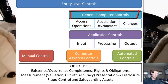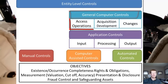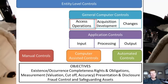The key areas for general computer controls can be summarized into three categories, though many literature uses more detailed categories. First, we have segregation of duties, and essentially that means we don't want the people who have access to the code to also have access to the transactional data. Secondly, we want to ensure that there is adequate system acquisition, development, and maintenance controls in place.